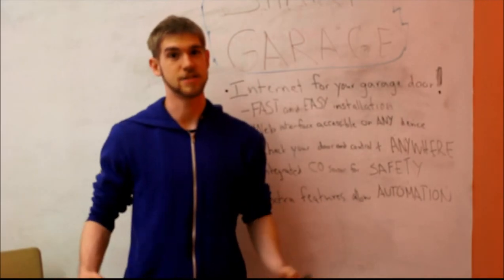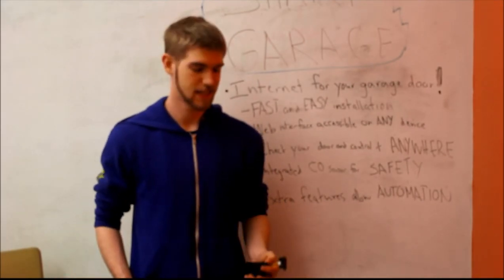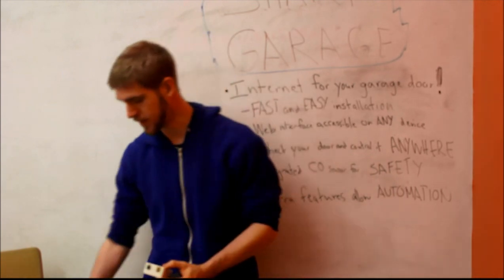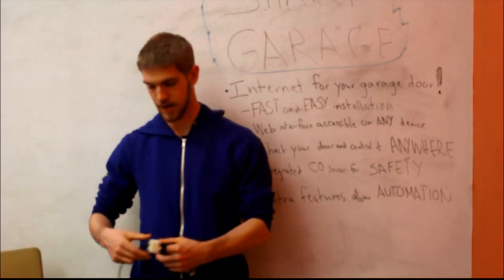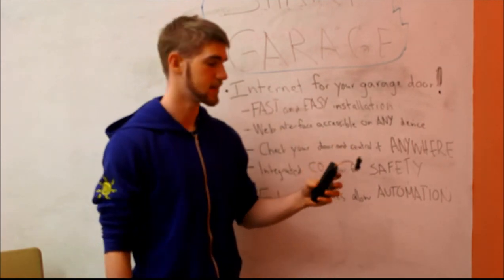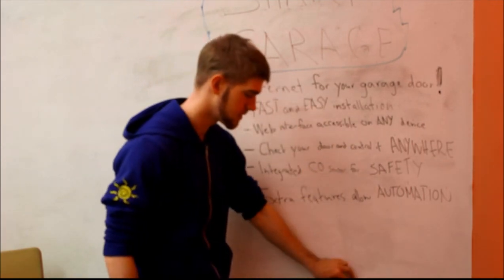Installing a smart garage is fast and easy and should take you less than five minutes. The device consists of a base station, which you simply plug in to an outlet in your garage and leave it there. And the sensor unit simply attaches directly to your garage door.